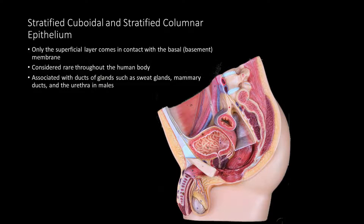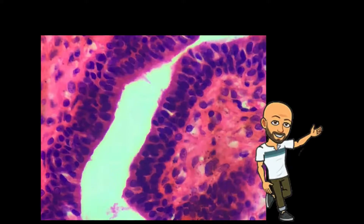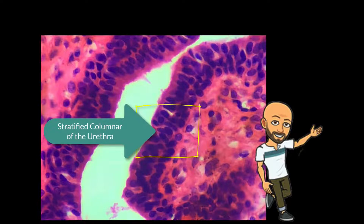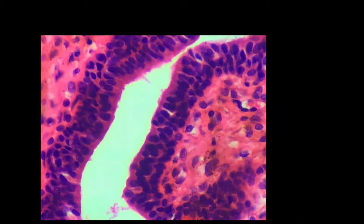Stratified columnar epithelia is even more uncommon within the human body. The main location we find stratified columnar epithelia is within the male urethra. We can see the multiple layers of stacked stratified columnar epithelia in this view.